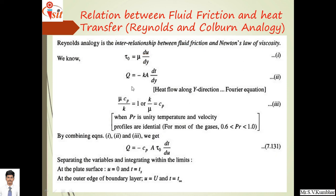Combining equations one, two, and three, we get q equals minus Cp A tau naught dt upon du. Here, mu Cp equals k so the value of k is replaced as mu Cp, and the value of mu is replaced as tau naught dy upon du. This mu is written and du upon dy is shifted to the left-hand side, so mu equals tau naught dy upon du. Replacing this relation gives minus Cp A tau naught dt upon du.